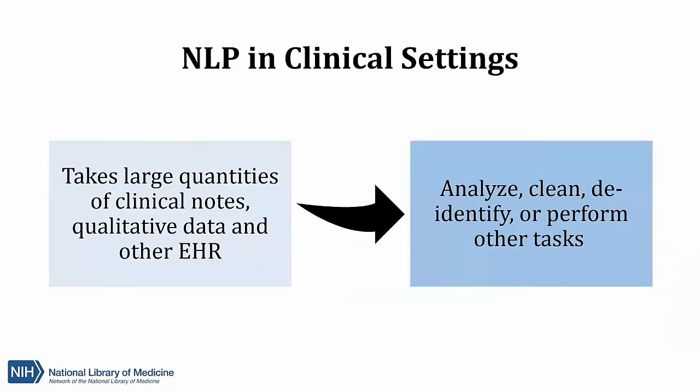Now that we've talked about NLP in general, we want to turn our focus to looking at how NLP can work in clinical settings. NLP works on text, and this means it can work on clinical texts — think of examples such as doctor's notes, electronic health records, patient medical histories, and other qualitative text data. Natural language processing can be used to analyze or, as in the example we're highlighting today, to de-identify this kind of data. The processing power of NLP programs means these tasks can be run on large quantities of data.